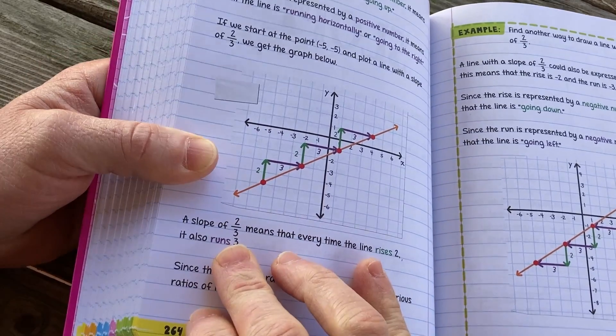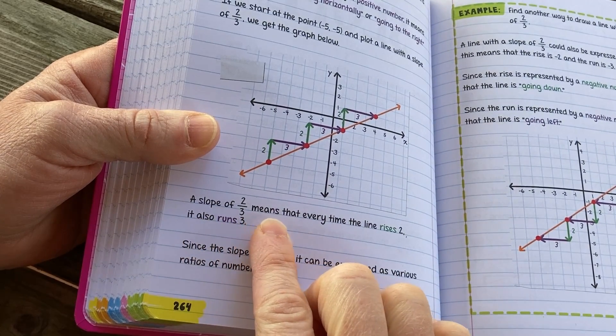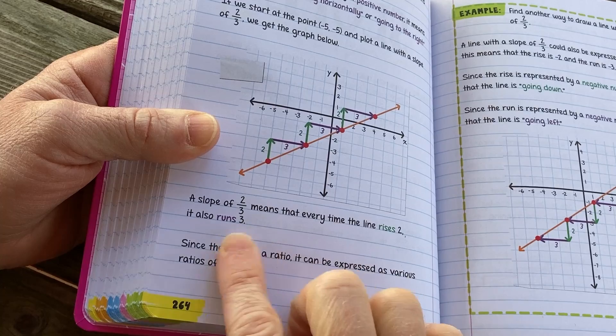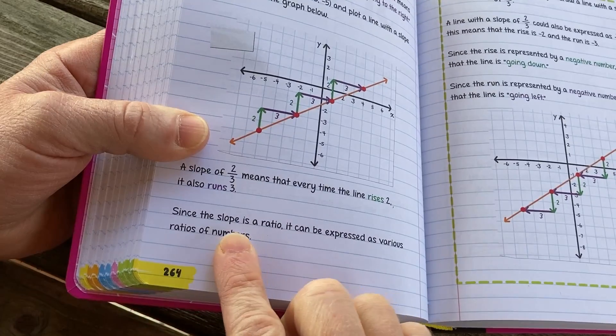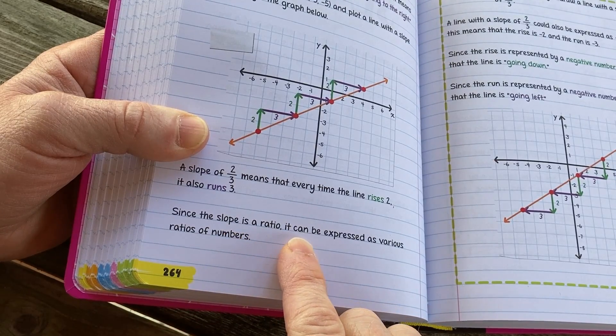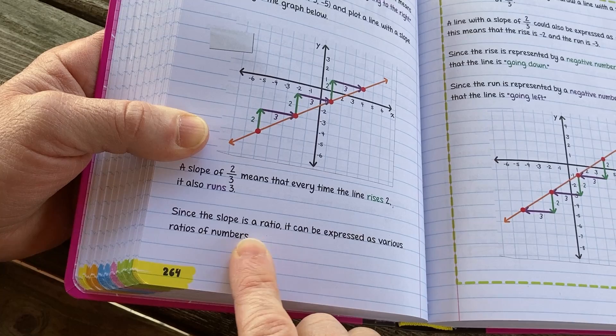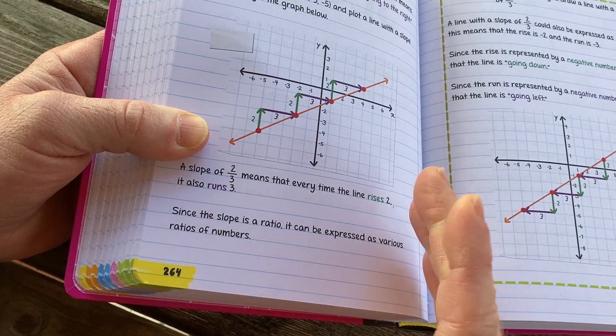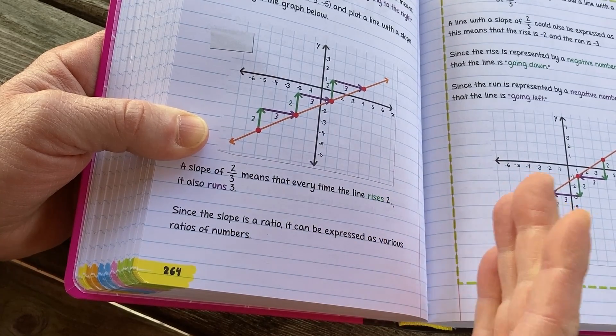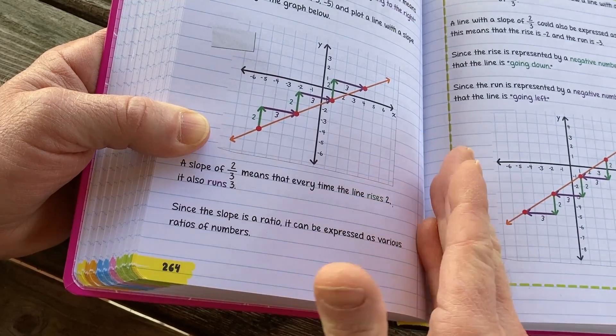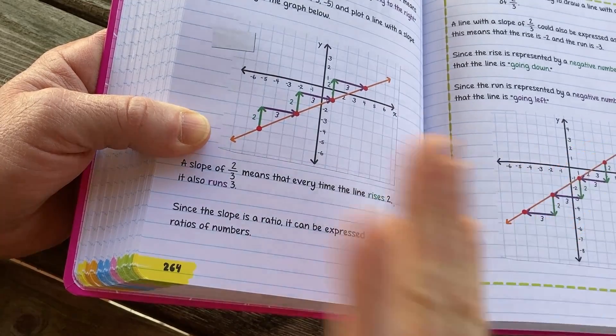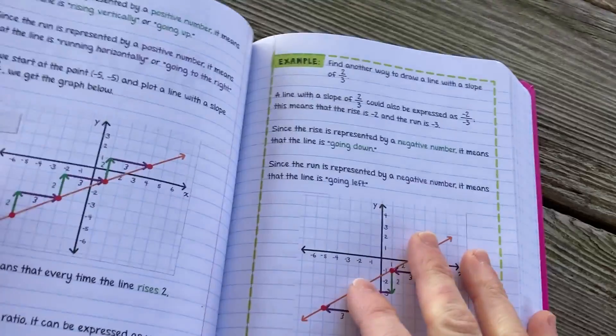A slope of two-thirds means that every time the line rises two, it also runs three. Since the slope is a ratio, it can be expressed as various ratios of numbers. So like you could do four over six. That would be the same thing. You rise four, run six. It's going to give you the same line because they're the same fraction.